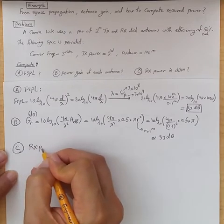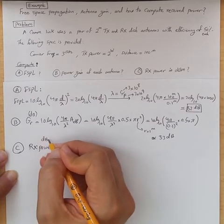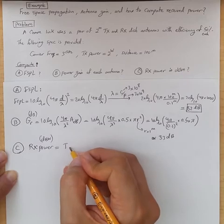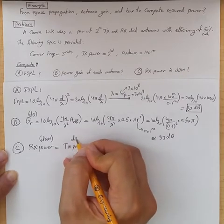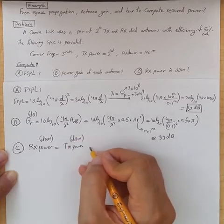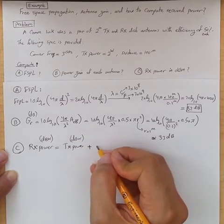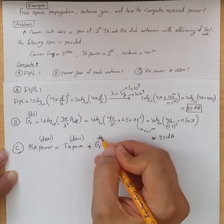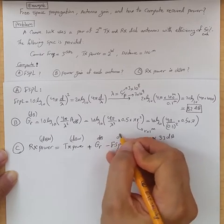the received power is, again, in dB watt, or dBm, is transmit power in dB watt, plus receive antenna gain in dB, minus free space path loss in dB.